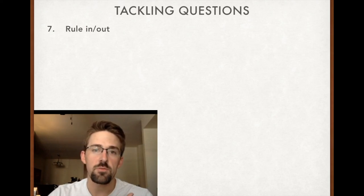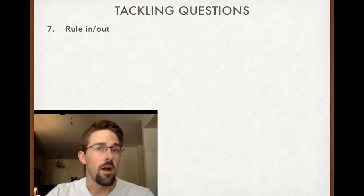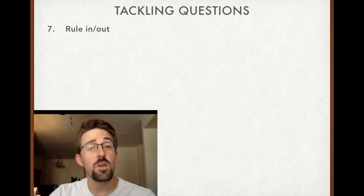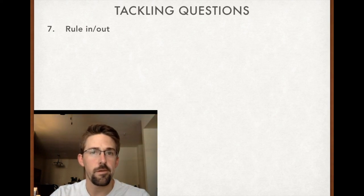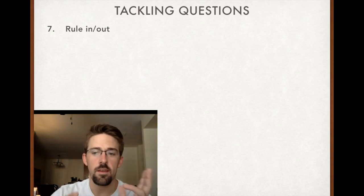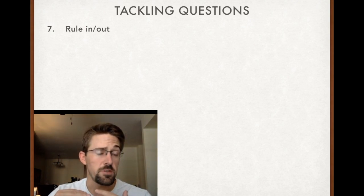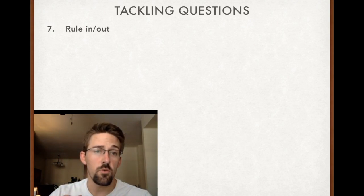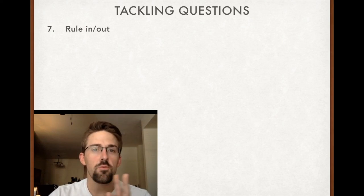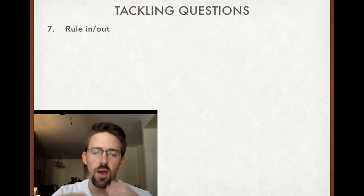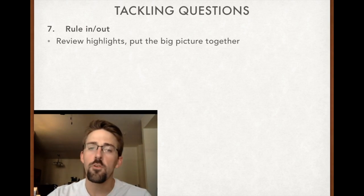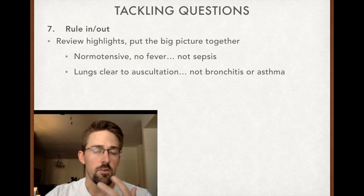Rule in and rule out based on information you've come across. Okay, I saw that the patient was hypotensive at 70 over 40. I'm not going to discharge them home. I'm going to get rid of that one. Okay, I see that this patient has a fever. Maybe they have pneumonia after all. If the patient has no fever and is normotensive and has a regular heart rate and rhythm, I'm probably not thinking sepsis. So you're ruling yourself in and out based on what you've highlighted, what you've looked at in the question. Review your highlights, put the big picture together. Again, normotensive, no fever. It's probably not sepsis. Go with what you know.